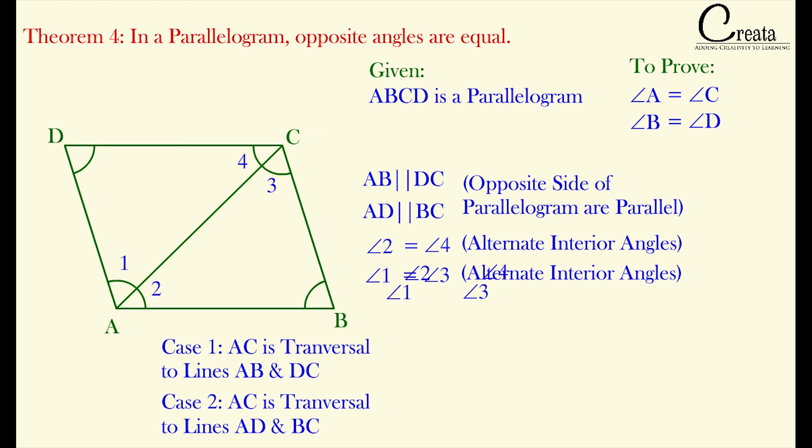So adding both equations, we got angle 1 plus angle 2 is equal to angle 3 plus angle 4. That is, angle A is equal to angle C. Angle 1 plus angle 2 equals angle A, and angle 3 plus angle 4 equals angle C. So we got the opposite angles of a parallelogram are equal to each other.